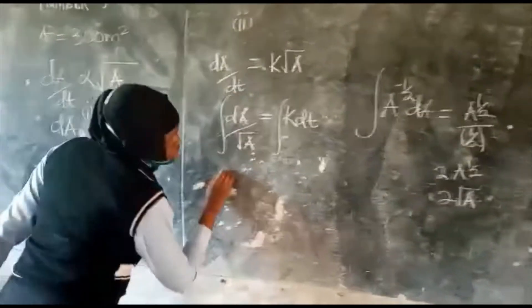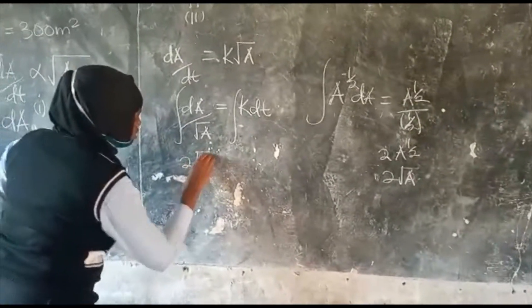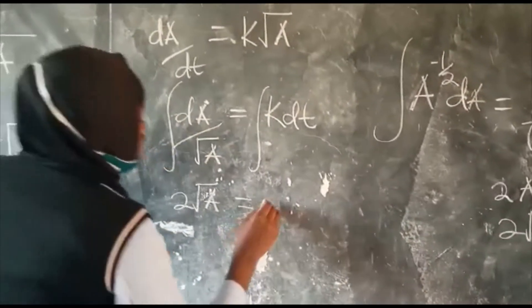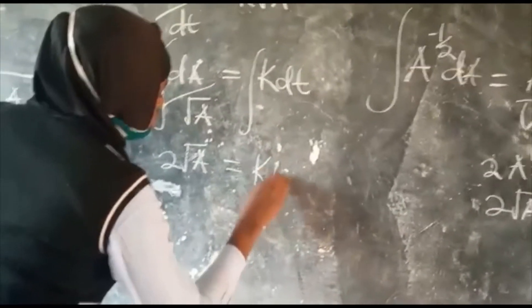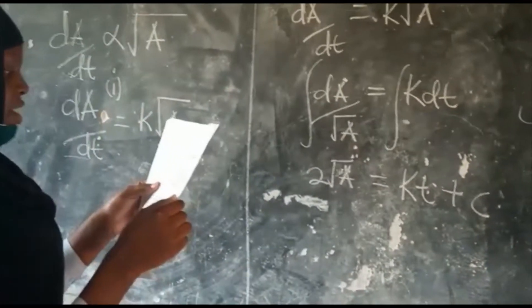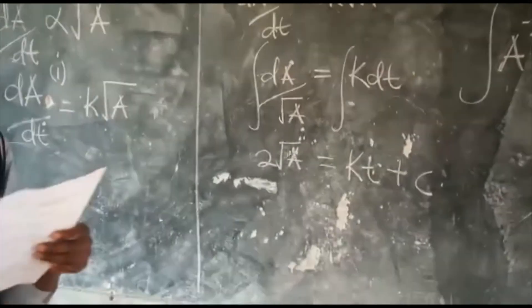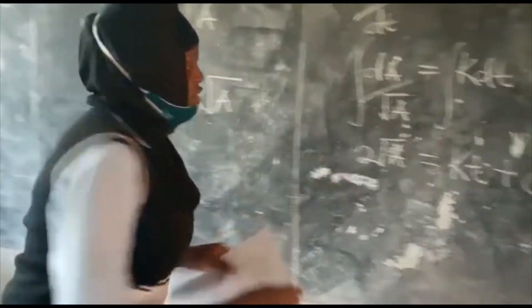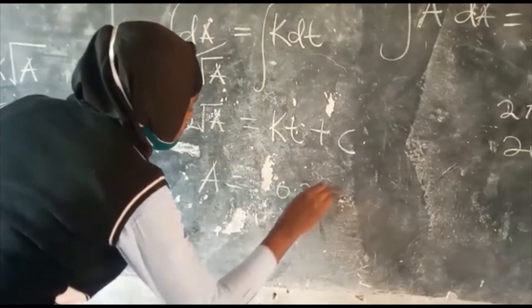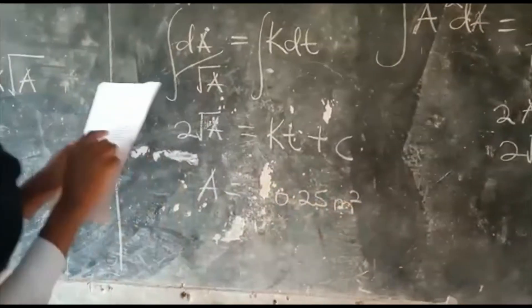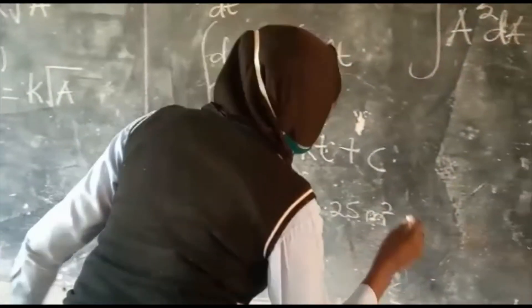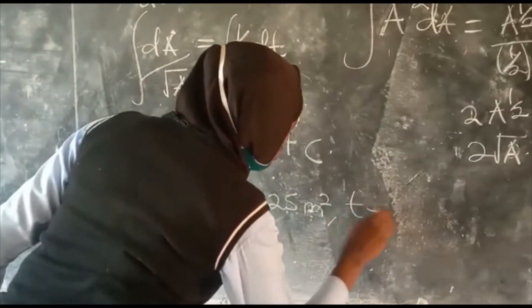So, 2 root A is equal to, when I integrate k, it is kt plus c. But they have told us that initially, the area covered by the weed is 0.25 meters squared. And also, since they have said that initially, our t is equal to 0.